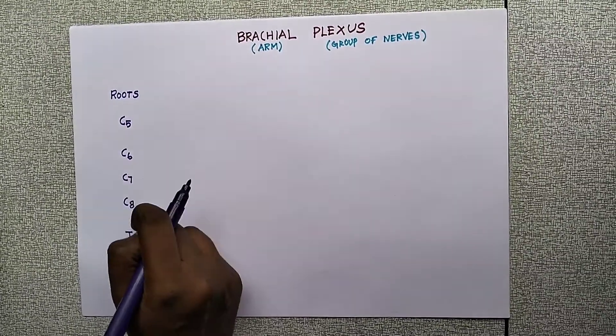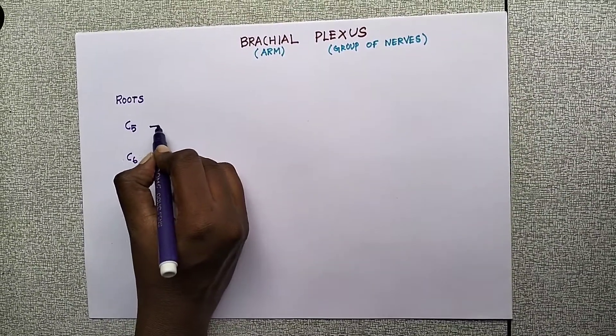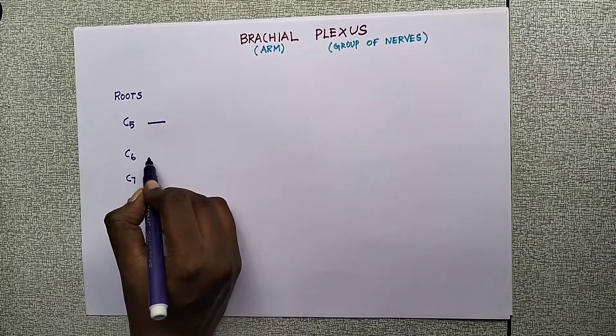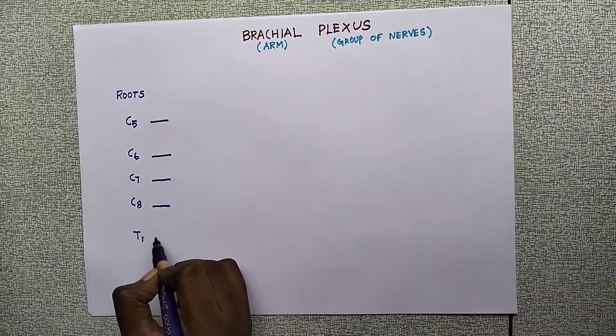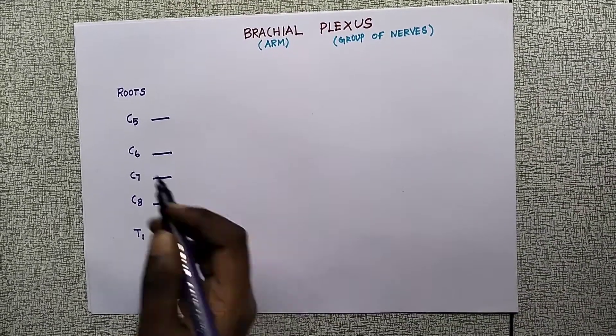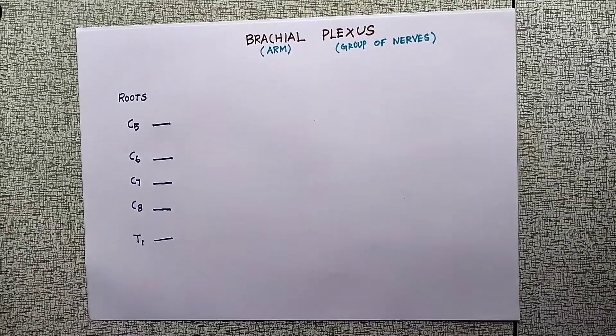The root values are C5, C6, C7, C8, and T1. Now let's look at the trunks.